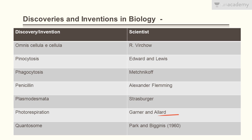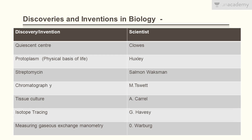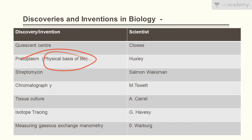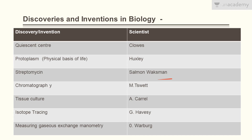Quantosome was discovered by Park and Biggins in the 1960s. Quiescent centre was discovered by Clowes. Protoplasm — the physical basis of life — was discovered by Huxley. Streptomycin was discovered by Selman Waksman. Chromatography was discovered by M. Tswett.